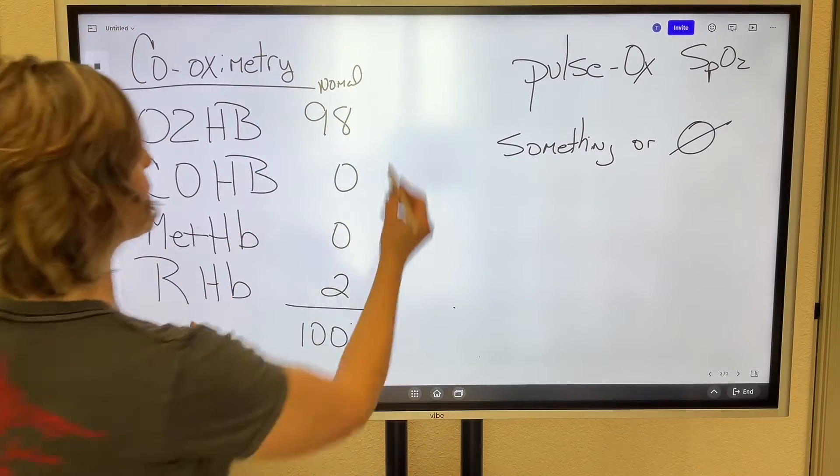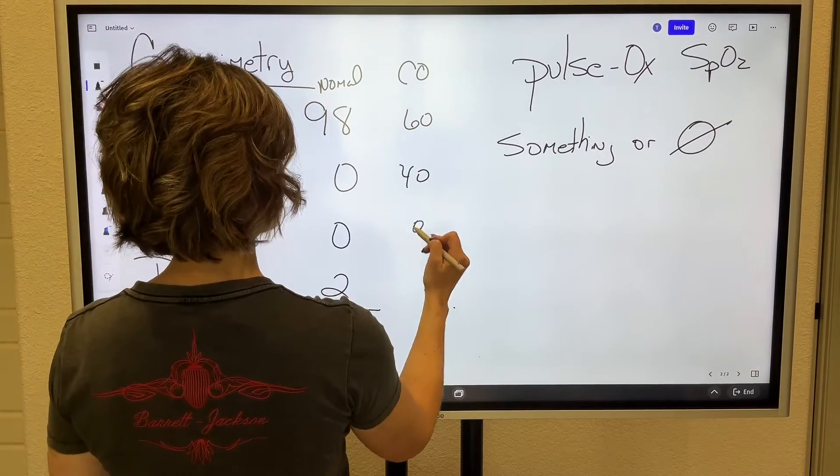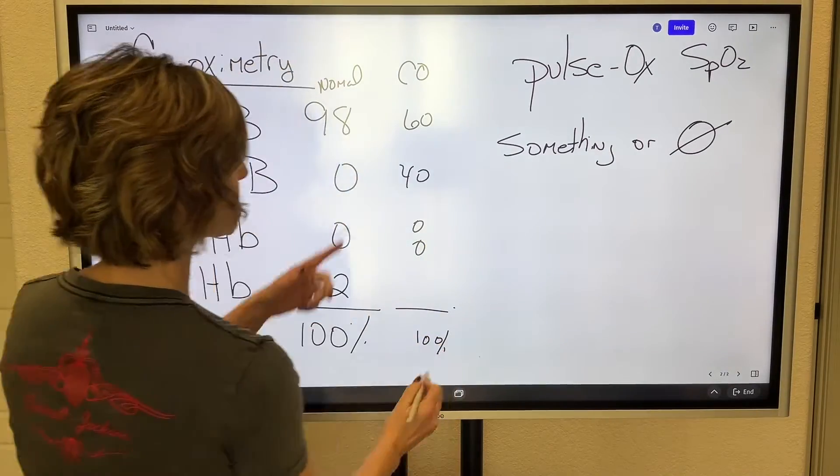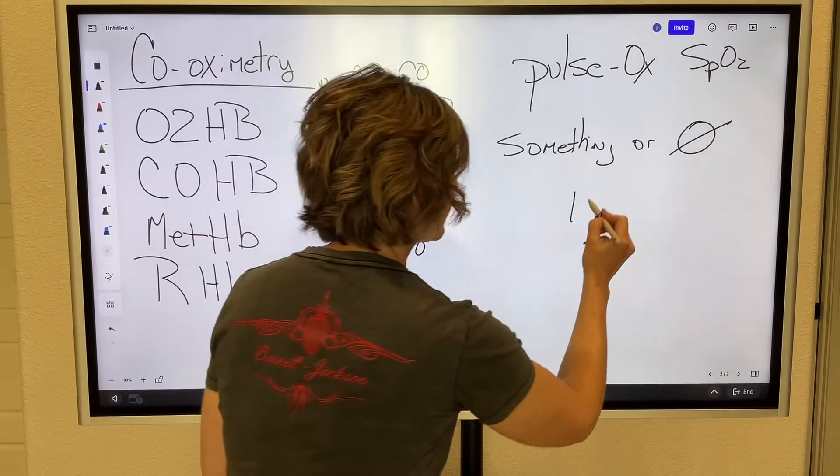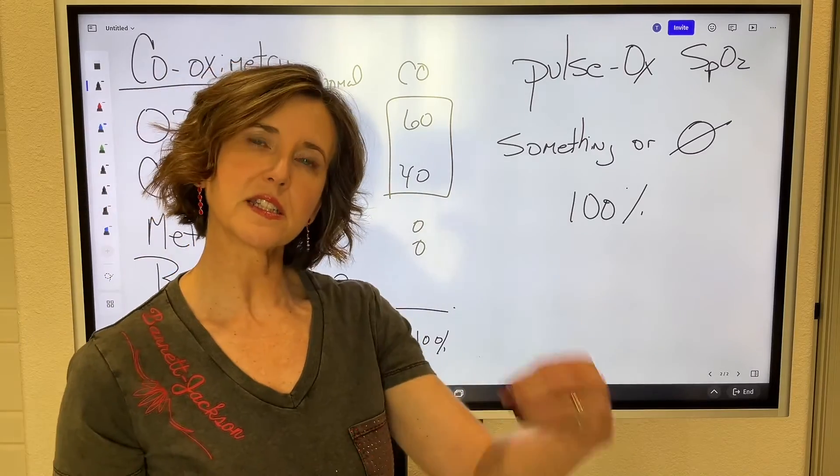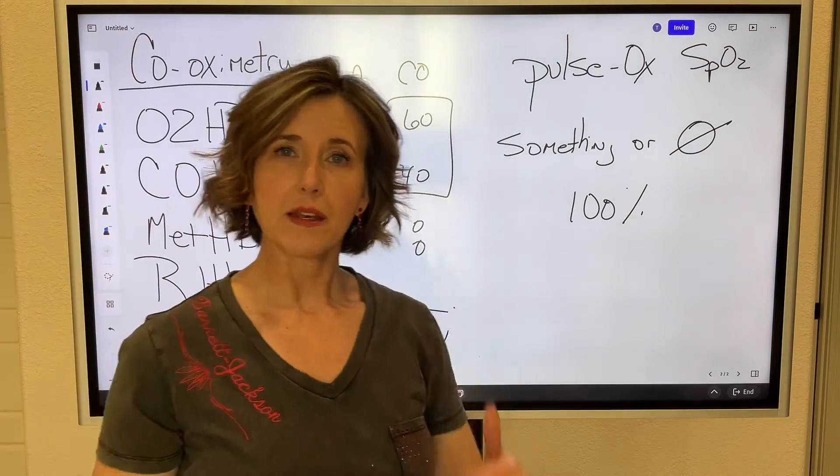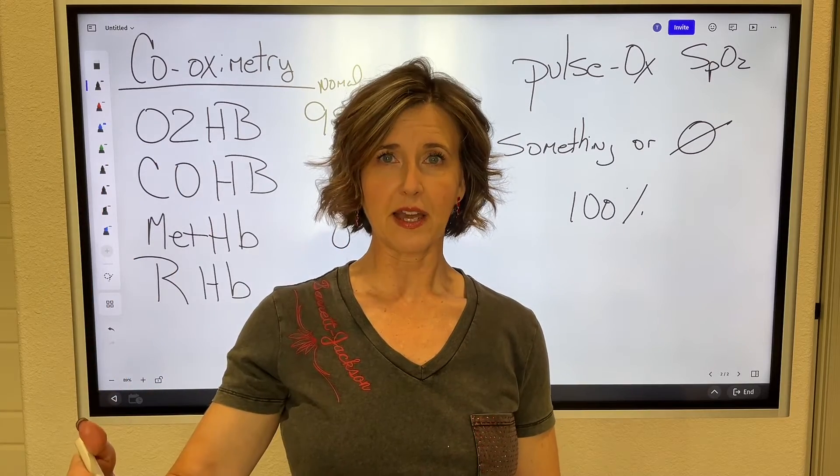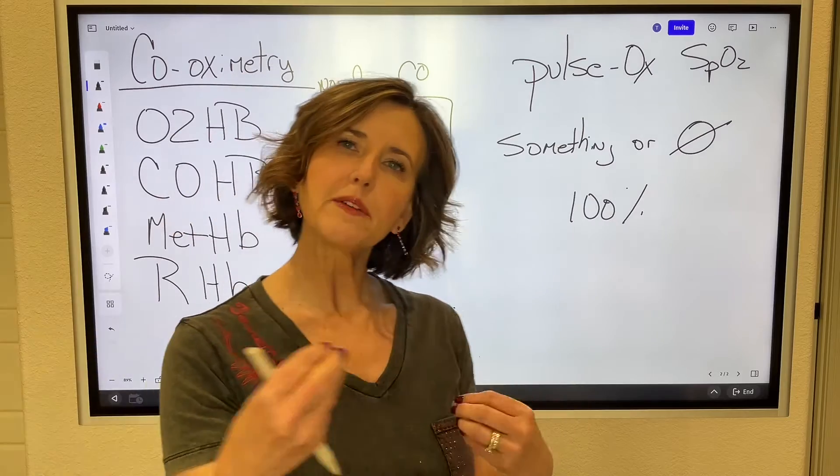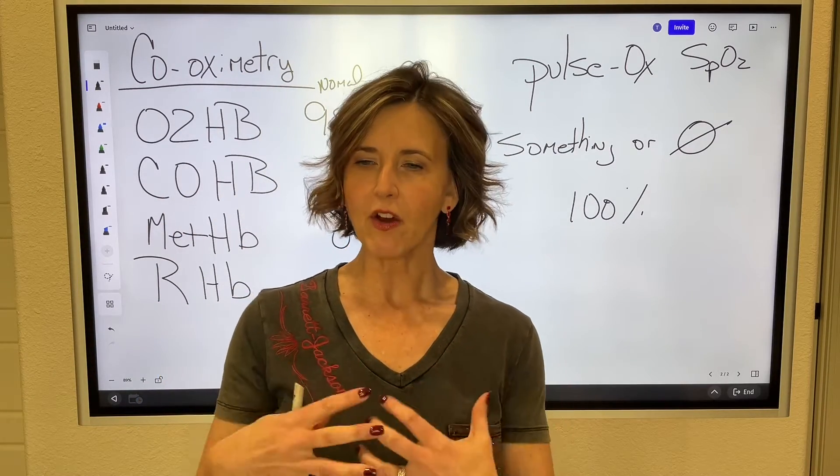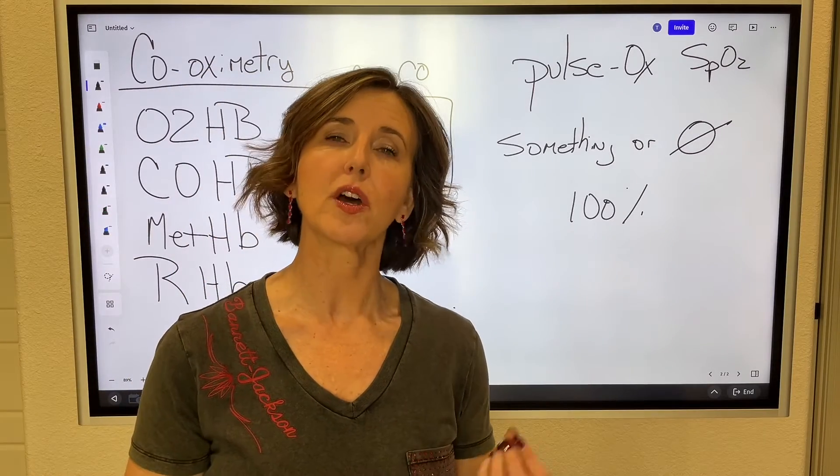So remember when I gave you that carbon monoxide poisoning a while ago and it was 60, 40, 0, and 0? If we put a pulse ox on this patient, that pulse ox knows something is attached to it and it's going to read 100%. The pulse ox doesn't differentiate between oxygen and carbon monoxide. It does not differentiate between oxygen and methemoglobin. It just knows something's attached to the hemoglobin or nothing is attached to the hemoglobin.